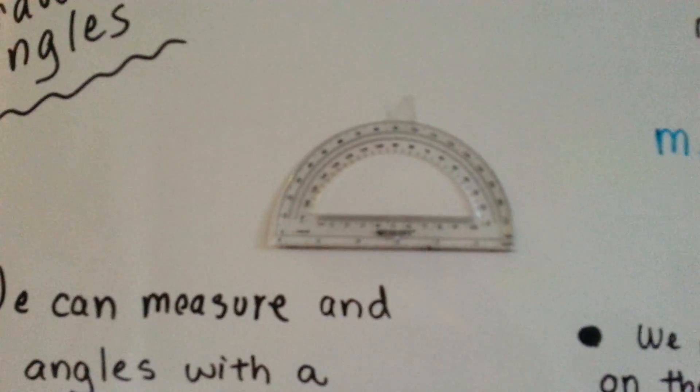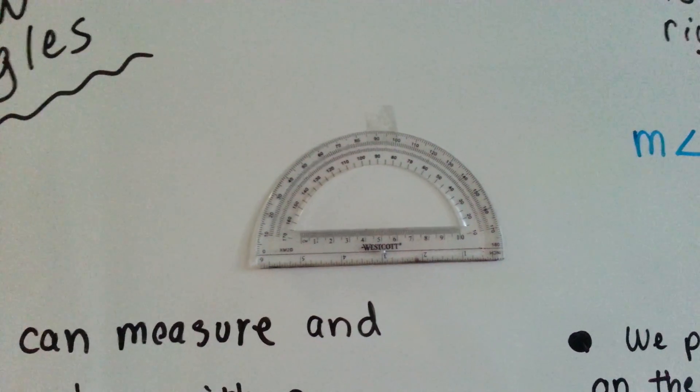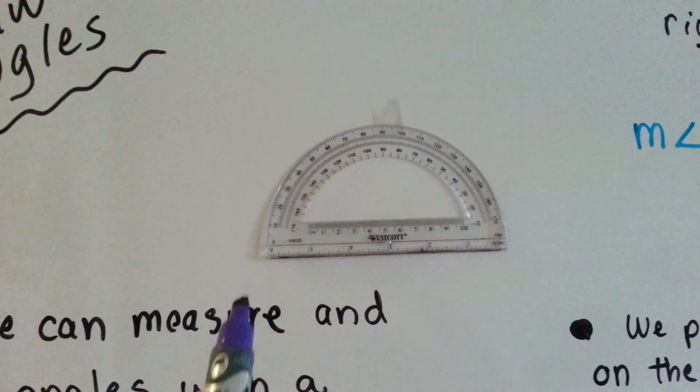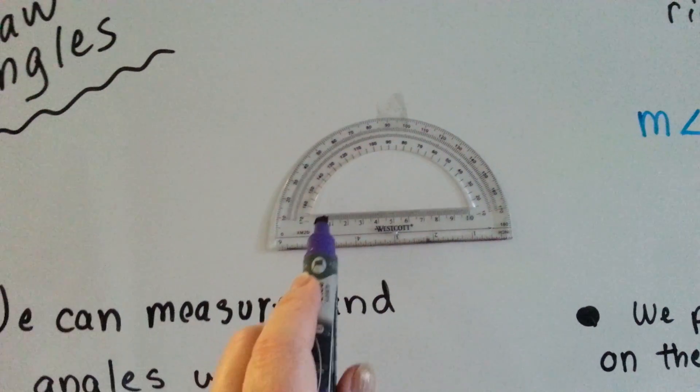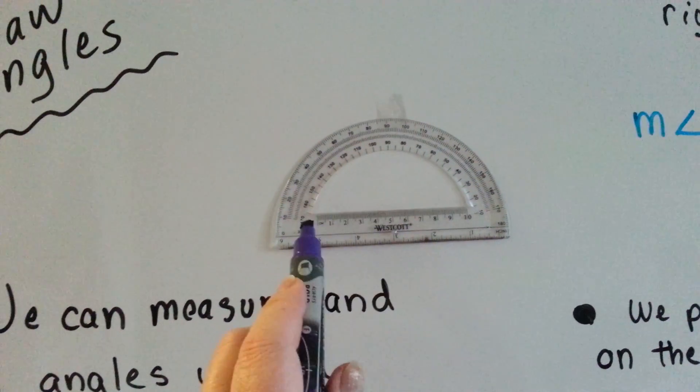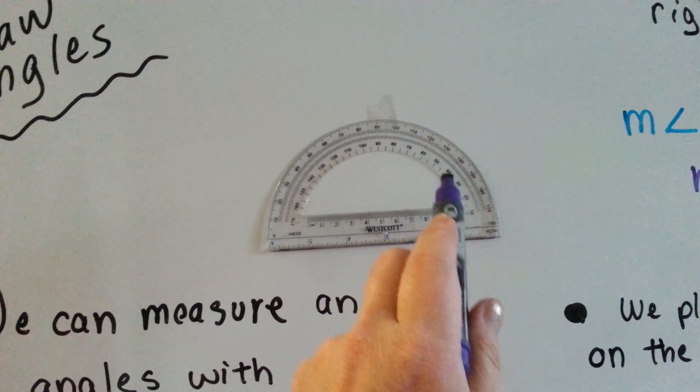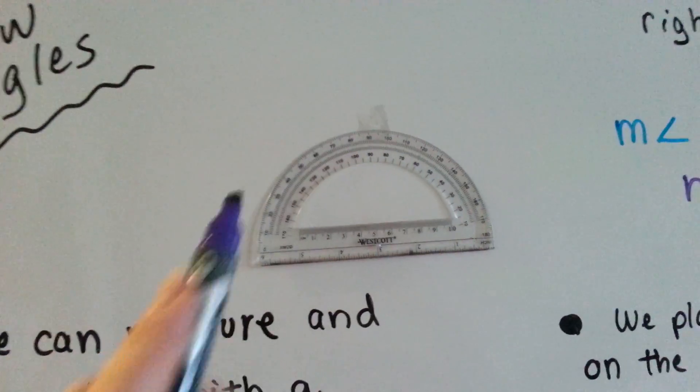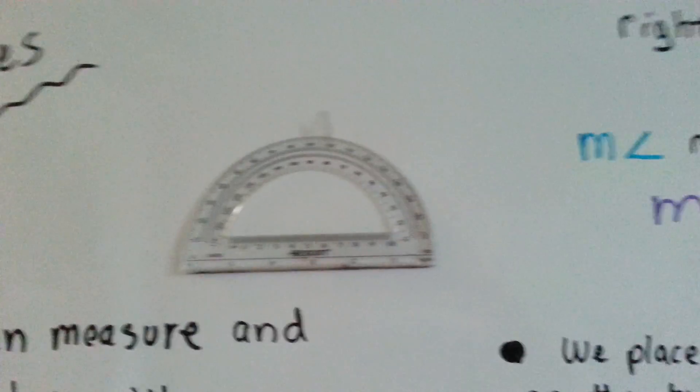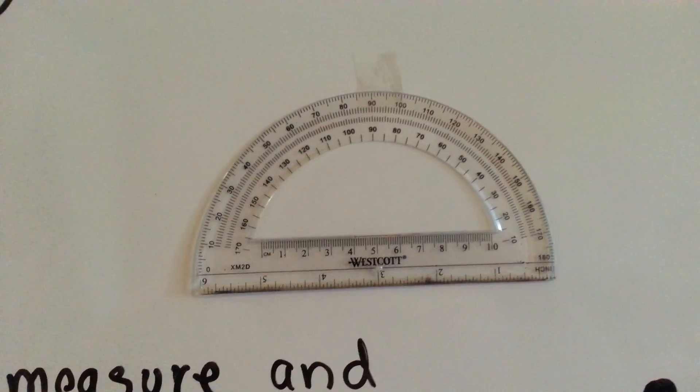So I want to show you this. This is my protractor. It's got inch measures down here, centimeter measures right here, and then on the inside of this arc are degree measures, and on the outside of this arc are degree measures. Maybe if I turn the light on a little bit, you'll be able to see it better. That helps.